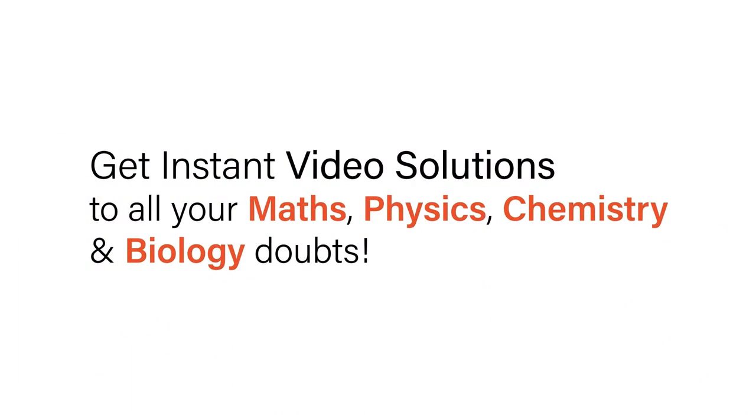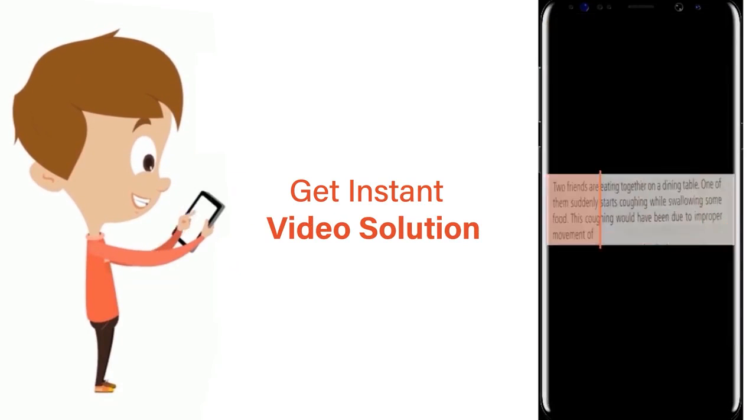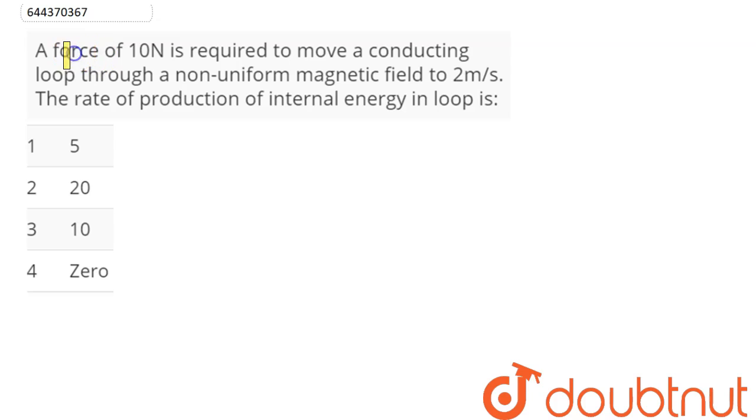With Doubtnet, get instant video solutions to all your maths, physics, chemistry, and biology doubts. Just click the image of the question, crop the question, and get instant video solution. Download Doubtnet app today. Question is: a force of 10 newton is required to move a conducting loop through a non-uniform magnetic field to two meter per second. Rate of production of internal energy in the loop is...